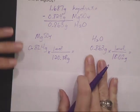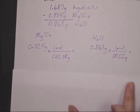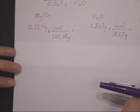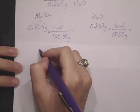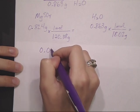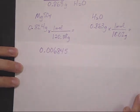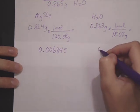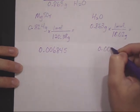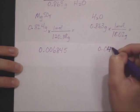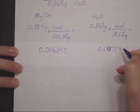And then we get from that, paper up a bit here so I know we can see. For the magnesium sulfate, we get 0.006845. And for the water, we get 0.04789 moles.